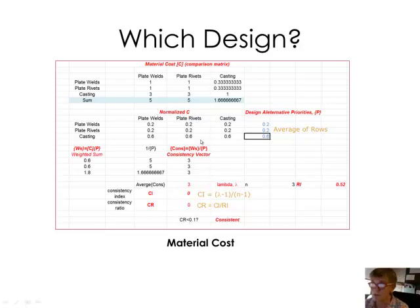So is the consistency ratio less than 0.1 for this case of material cost? I calculate the consistency ratio just like we did before and find that it's less than 0.1, and so this matrix is consistent. So now I would move forward with manufacturing cost, repairability, and so forth.